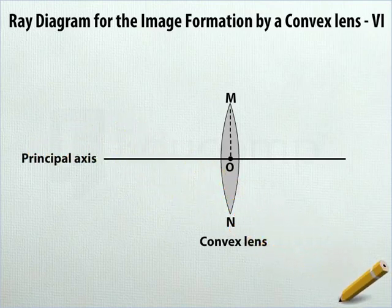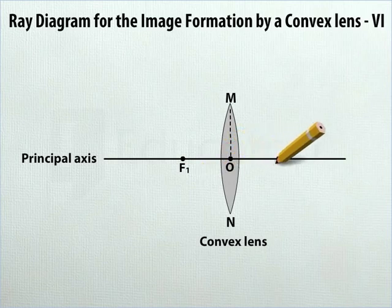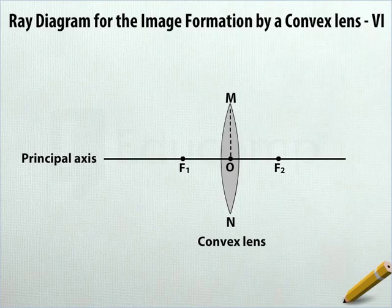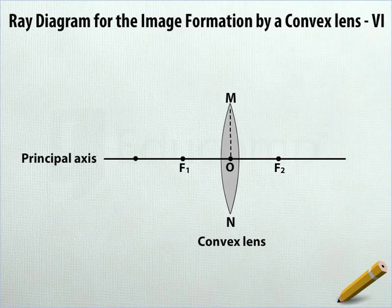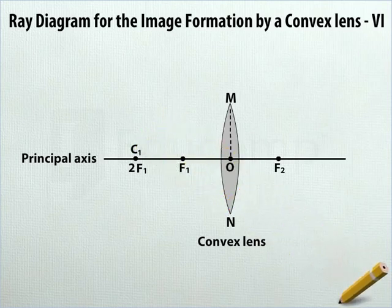On the principal axis on both sides of O, put two dots equidistant from O. Mark the dots on the left F1 and that on the right F2, F in uppercase. To the left of F1 on the principal axis, put another dot such that the distance between the two dots is equal to the distance OF1. Below this new dot, write 2F1, F in uppercase, and above it, write C1, C in uppercase.